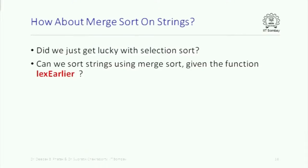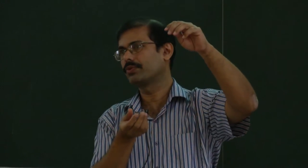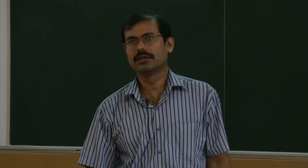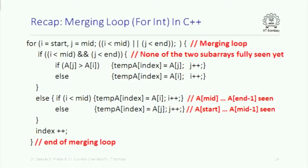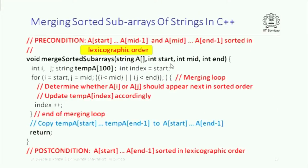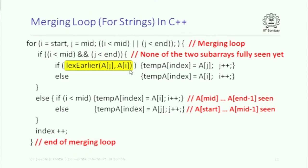Did we just get lucky with selection sort, or will this work for merge sort too? If you look at merge sort, when merging two sorted subarrays, we looked at the two elements pointed to by two arrows and figured out which one should appear before the other. It is really the same question: given two elements, which one should appear before the other? If there are two strings, we can use the same lex_earlier function. Whenever we compared two elements to figure out which goes earlier in the sorted array, we now use: if a[j] is lexicographically earlier than a[i], copy a[j] to temp, otherwise copy a[i] to temp.